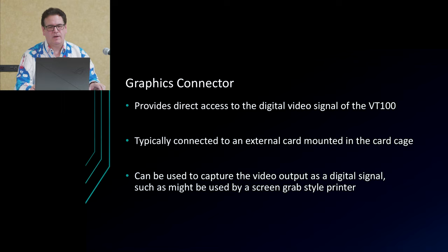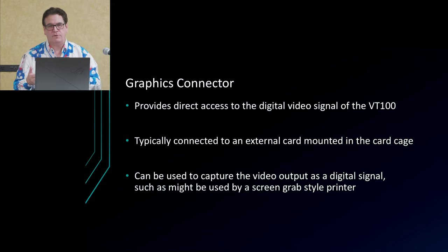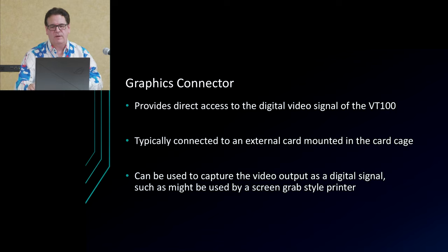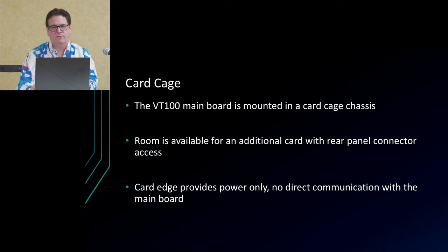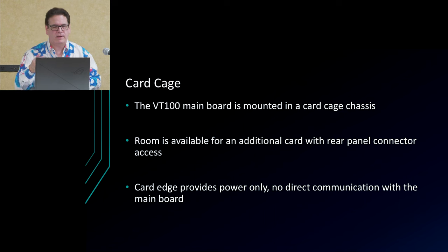The graphics connector gives you direct access to the digital video signal of the pixels going to the VT100's monitor. Usually you run a ribbon cable from that connector to a separate board plugged into the card cage — enabling things like a printer that grabs pixels off the screen and prints them, as opposed to printing from a command stream from the host. The card cage itself is basically just a way to supply power to the board; it doesn't carry communication signals, but there's an extra slot if you need a lot of functionality and want to attach yourself to the advanced video option connector or the graphics connector.